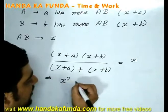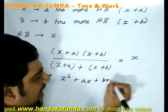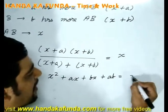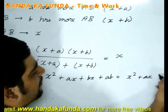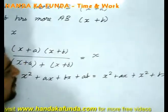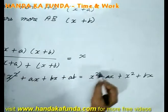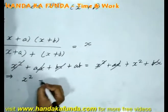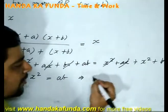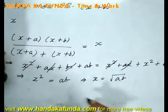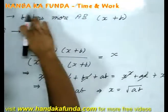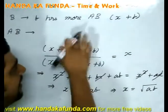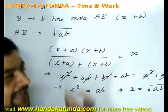In the numerator it will be X squared plus AX plus BX plus AB. When this goes to the other side, it becomes X squared plus AX plus X squared plus BX. The X squared terms cancel, AX cancels, BX cancels, and we are left with X squared equals AB, or X equals the square root of AB. This confirms that if A takes A hours more than A and B combined, and B takes B hours more than A and B combined, then together they take the square root of AB hours.